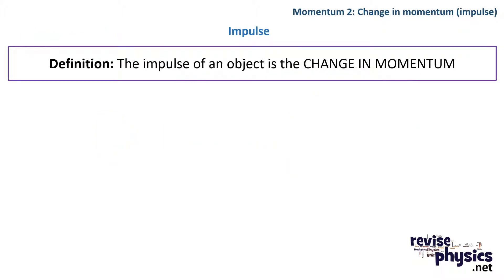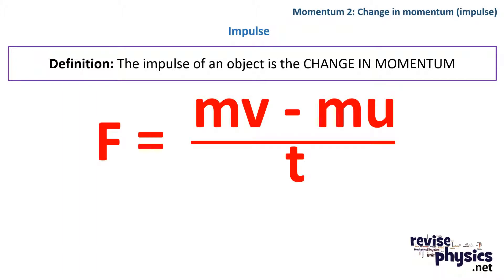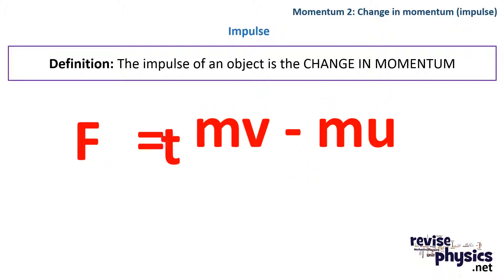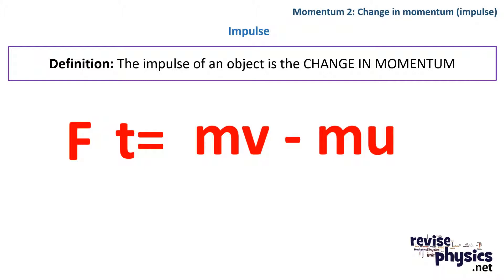So the definition of impulse is it is the change in momentum. So it's either delta mv or, as we can see here, if we bring time up to the top, impulse is also equal to force times time. And the unit, other than kilogram meters per second, is newton seconds. So impulse can also be force times time with units newton seconds.